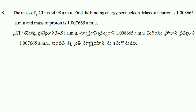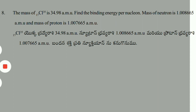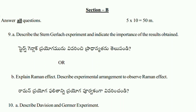So here we have eight short questions. Next are the important essay questions from the model paper. Question nine A: describe the Stern-Gerlach experiment and indicate the importance of the results obtained. And nine B: explain Raman effect.